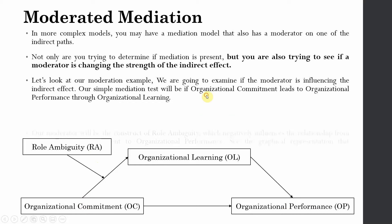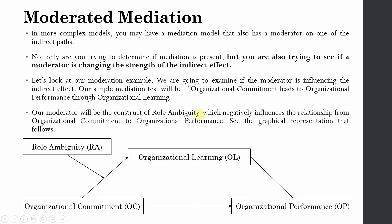Role ambiguity is the construct which negatively influences the relationship from organizational commitment to organizational performance through organizational learning. I am interested in testing whether role ambiguity weakens the indirect effect from organizational commitment to organizational performance through organizational learning, or whether at lower levels of role ambiguity it strengthens that indirect effect. This is the graphical representation of the moderated mediation model.